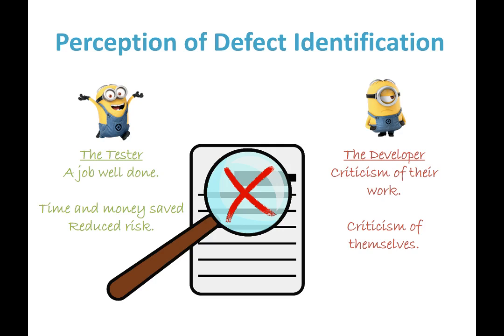When a defect is found, the tester thinks 'happy days — I've done my job well, saved the organisation time and money, and reduced risk so the product has a better chance when it goes to market.' A developer, on the other hand, can see it as a personal attack — a criticism of their work and themselves. If the relationship is handled badly, this can become quite a big problem, but there are steps we can take to prevent that.